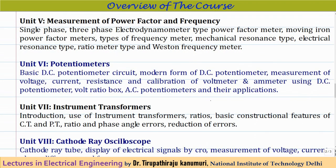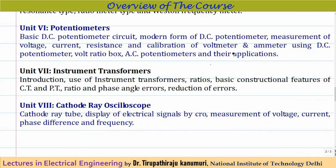Module 5 covers measurement of power factor and frequency. We will discuss single phase and three phase electrodynamometer type power factor meters, moving iron power factor meters, and types of frequency meters — mechanical resonance type, electrical resonance type, ratio meter type, and the Weston frequency meter.